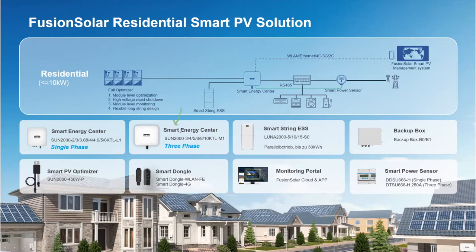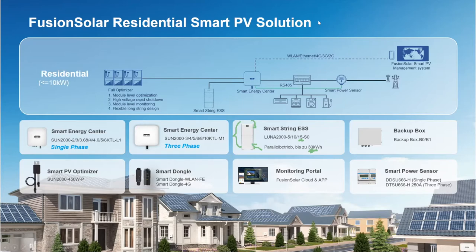For three-phase, we have inverters with power starting from 3 kW all the way up to 10 kW. For the battery, we have two modules: a power module and the battery module. Each battery module is 5 kWh, and the full battery can have 15 kWh. They can also work in parallel for the same inverter, thus having 40 kWh per inverter. As we go on in the presentation, I will talk more in detail about each of the components.